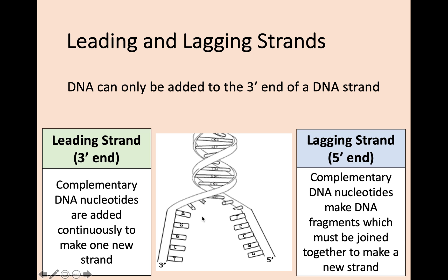The other strand of DNA, the 5' end, is called the lagging strand. Lagging means it has fallen behind a little bit — it's not as simple as the 3' leading strand process. This is not a continuous zip. What happens is that complementary DNA nucleotides make fragments of DNA, and individual fragments are joined together on the 5' end in order to make a new strand.